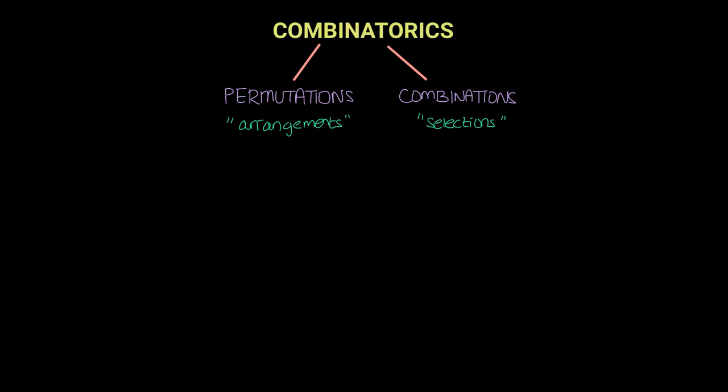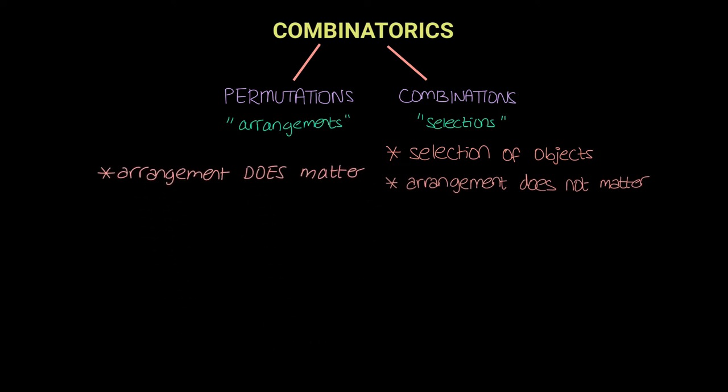To define the properties of permutations and combinations, we need to know that combinations is a selection of objects and arrangement does not matter, whereas for permutations arrangement does matter.